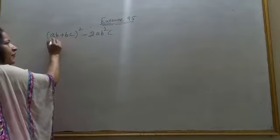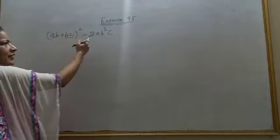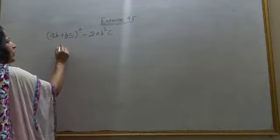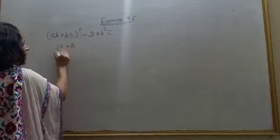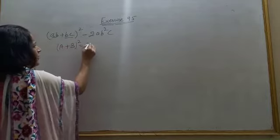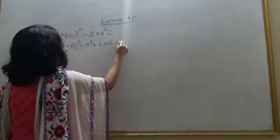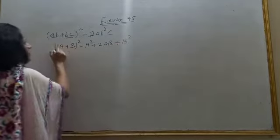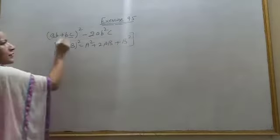Open this identity. First term plus second term whole square, then minus. You know the identity well: AB square is equal to A square plus 2AB plus B square. Use this identity only in this part.